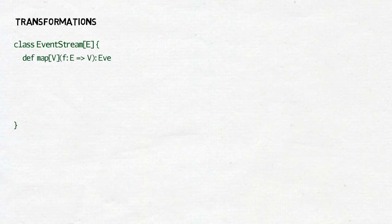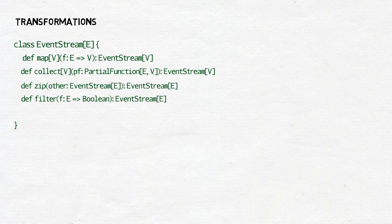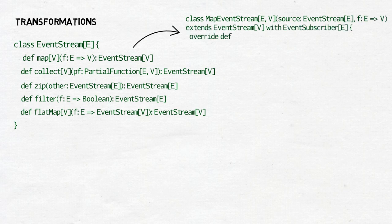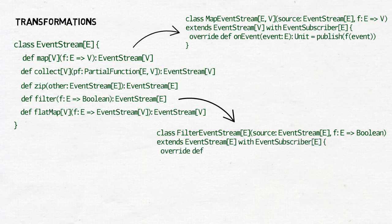But first, transformations. If broadcasting events was all an event stream could do, it wouldn't really be that interesting. Often, subscribers want to transform the event somehow before using it, or they are interested only in a certain subset of events, or both. Or the logic can be even more complicated — for example, an event can be interesting to the subscriber only if a certain event from another event source was received before it. To address those needs, event stream implementations come with a long list of methods such as map, flatMap, filter, collect, zip, and so on. With them, you can move the logic — which would otherwise have to be implemented in the subscriber — to the event stream. Each of those methods creates a new event stream that has the original one as its producer. The map creates a new event stream that publishes transformed events, and the filter creates an event stream that publishes an event from the parent only if a certain condition is fulfilled.